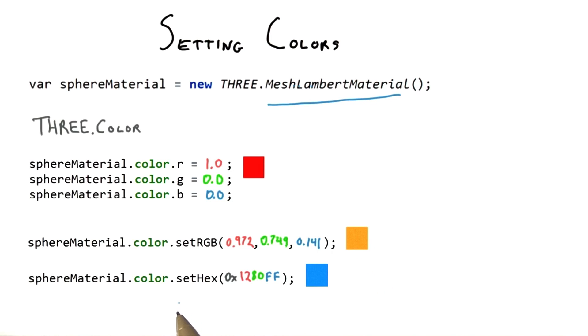A more compact way to set a color is to use hexadecimal numbers. Here I'm setting a bright blue. The value 0x1280ff is a single number holding the red, green, and blue channels all together.